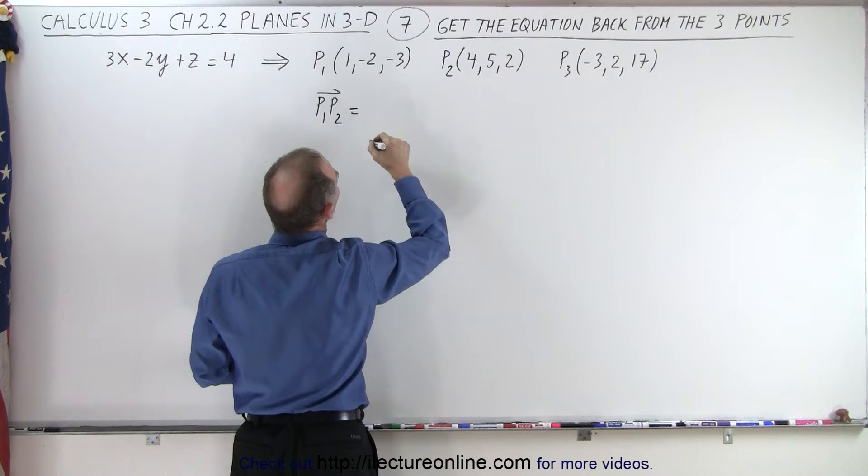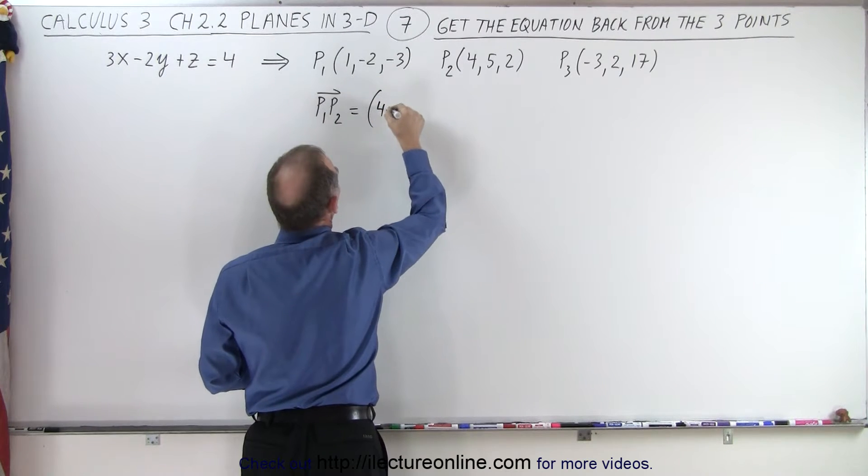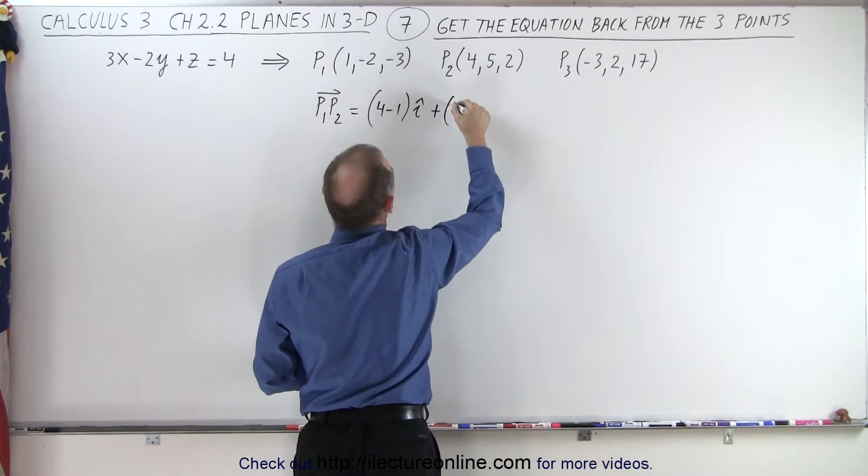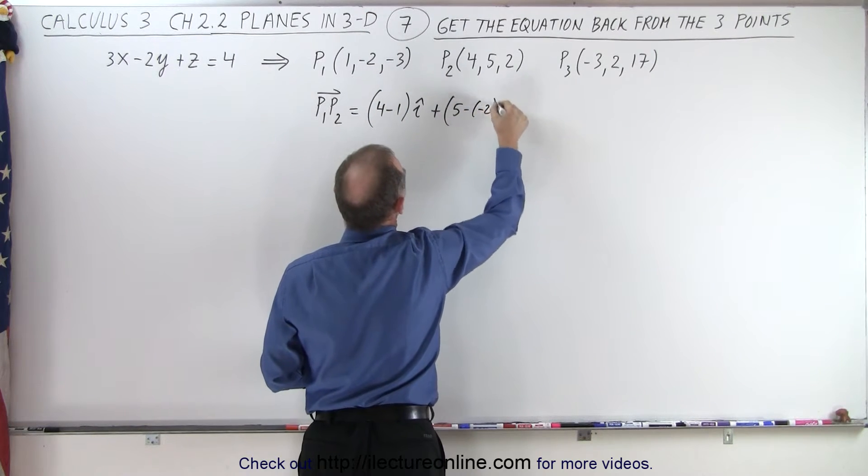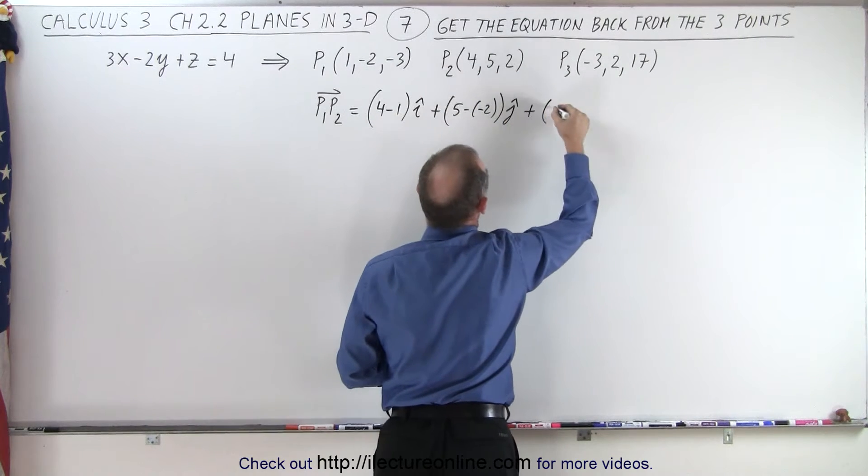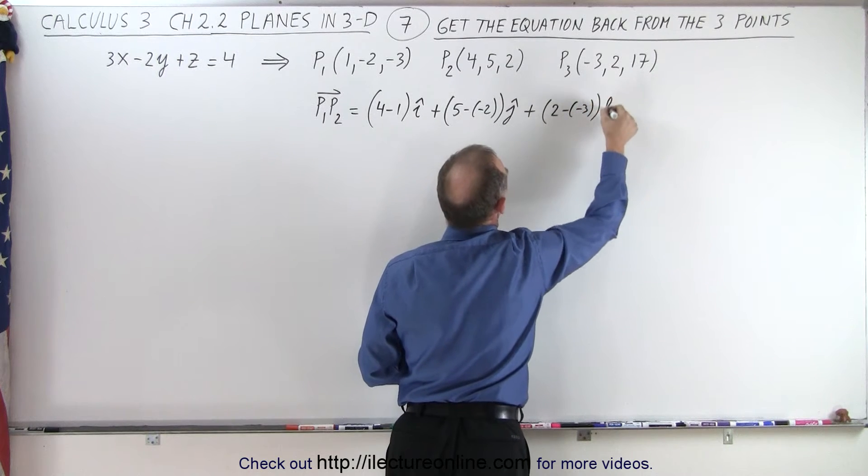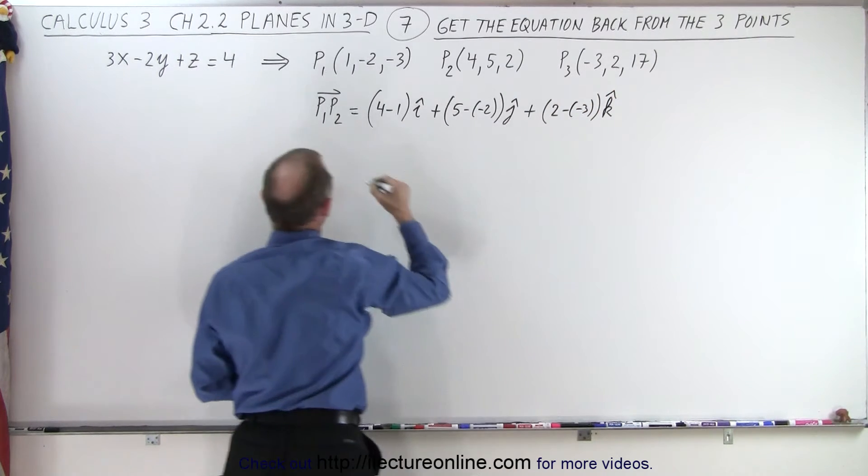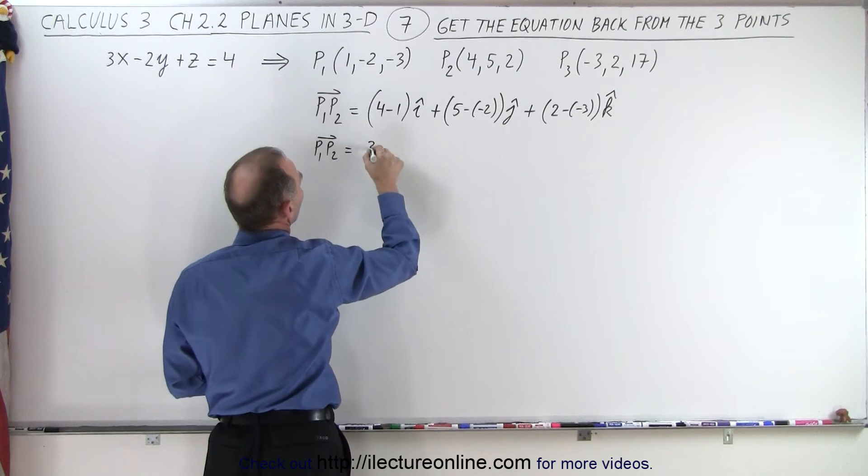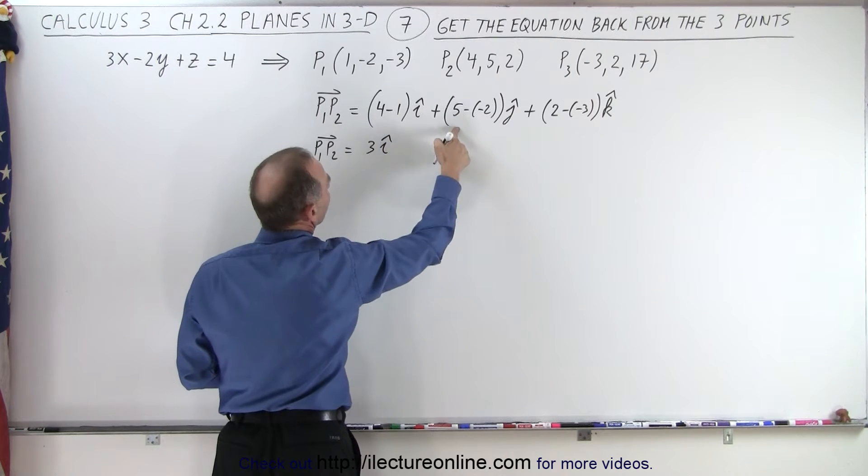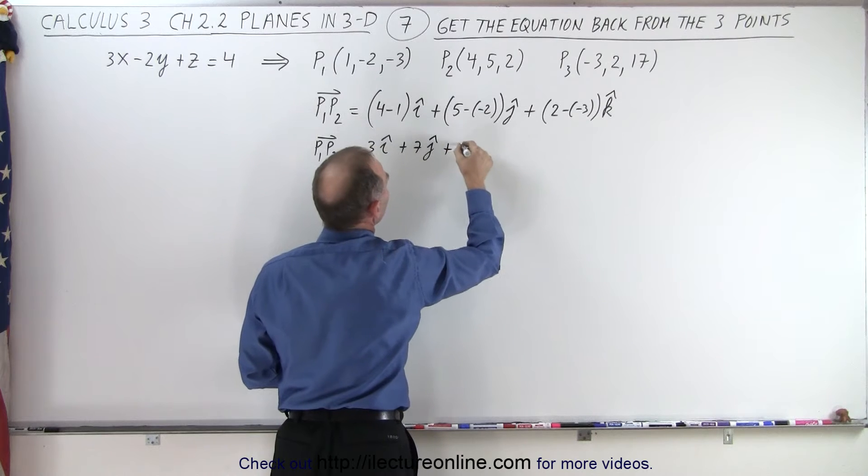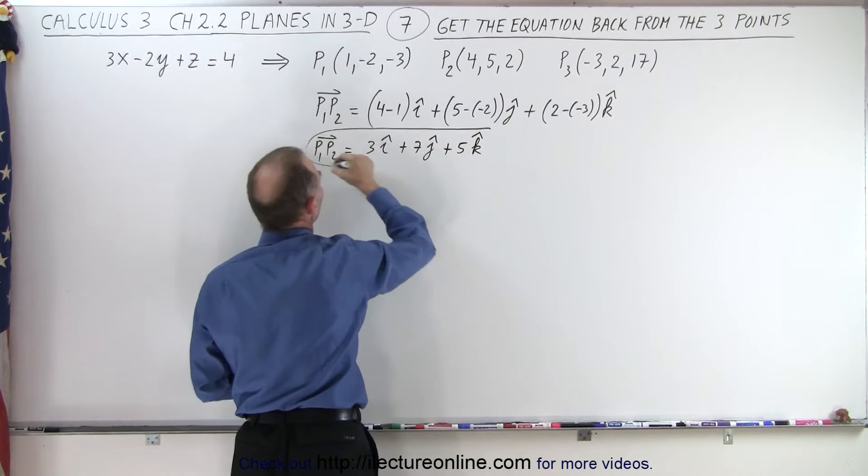So P1 to P2 is equal to 4 minus 1 in the i-direction, plus 5 minus the minus 2 in the j-direction, and plus 2 minus a minus 3 in the k-direction. So simplifying that, our first vector P1 to P2 is going to be equal to 3i plus 7j and plus 5k. There we go. First vector.